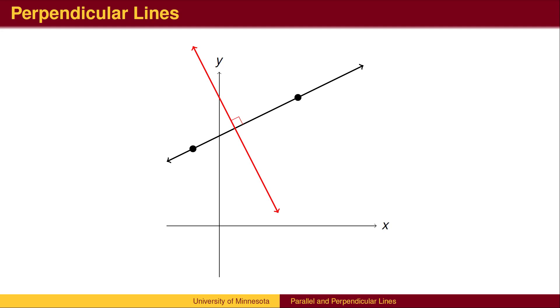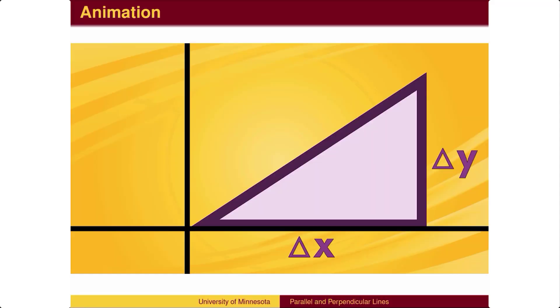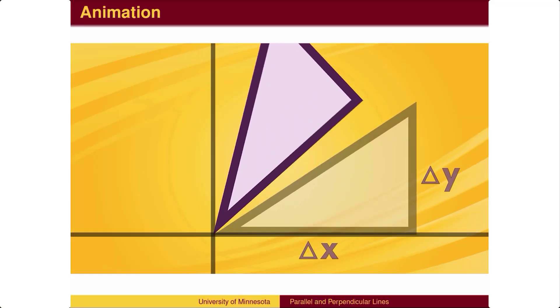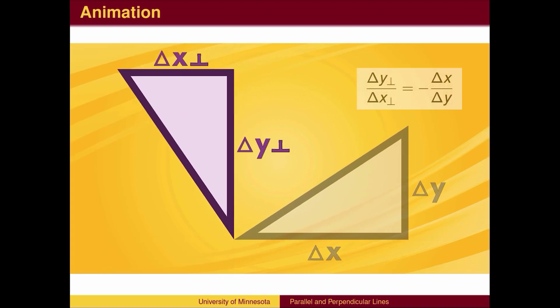If we know the slope between two points, what is the slope of a perpendicular line? When we rotate the triangle by 90 degrees, the rise and run interchange places. The change in x for the original triangle is now the change in y for the new triangle. The old change in y is now the change in x, but pointed to the left. The new slope is the negative reciprocal of the old slope.